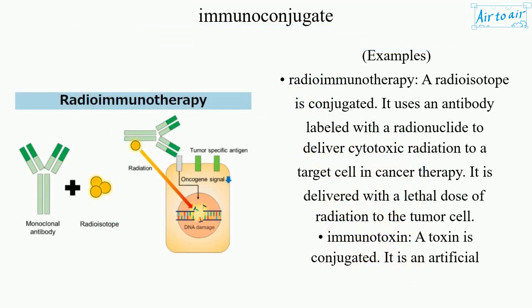Examples. Radioimmunotherapy: a radioisotope is conjugated. It uses an antibody labeled with a radionuclide to deliver cytotoxic radiation to a target cell in cancer therapy. It is delivered with a lethal dose of radiation to the tumor cell.